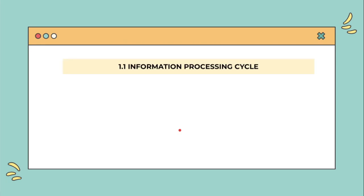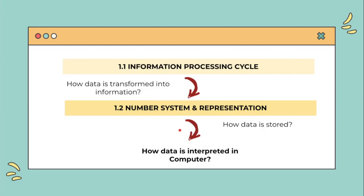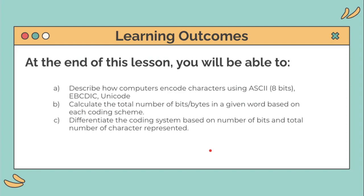For the first subtopic, information process cycle, you learned how data is transformed into information. Last week, on the second subtopic, you learned number systems and representation — how data is stored. This week, you will learn how data is interpreted in a computer using a scheme called information coding scheme. By the end of this lesson, you'll be able to describe how computers encode characters using ASCII 8-bit, EBCDIC, and Unicode, and calculate the total number of bits and bytes in a given word based on each coding scheme.